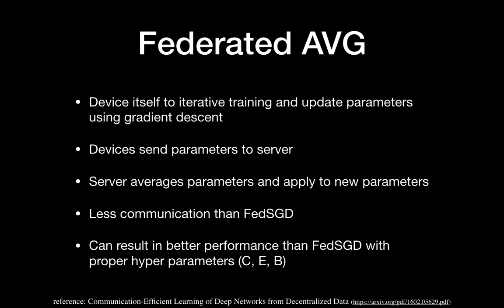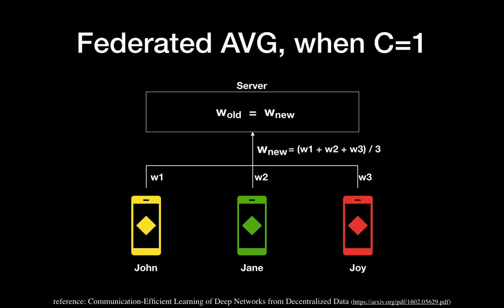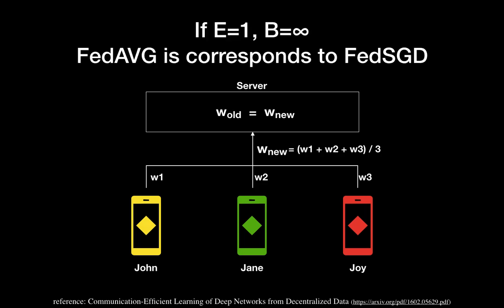By having multiple epochs, you can reach the smartest model with less communication than Federated SGD, and can result in better performance with proper hyperparameters C, E, and B. C is the client fraction, E is the epoch count, and B is the batch size. For example, W_new is the average of W1, W2, W3, replacing W_old. When C=1 and E=1 using a whole batch, it is exactly equal to Federated SGD. But with more epochs and smaller batch size, it behaves like mini-batch per device and is more efficient than Federated SGD.